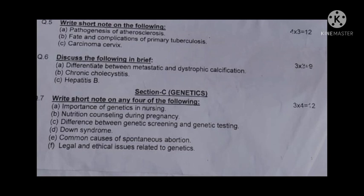Genetics section: write short notes on any four of the following — (a) importance of genetics in nursing medicine, (b) nutritional counseling during pregnancy, (c) difference between genetic screening and genetic testing, (d) Down syndrome, (e) common causes of spontaneous abortion, (f) legal and ethical issues related to genetics.